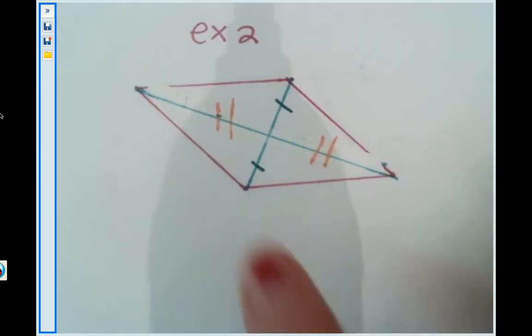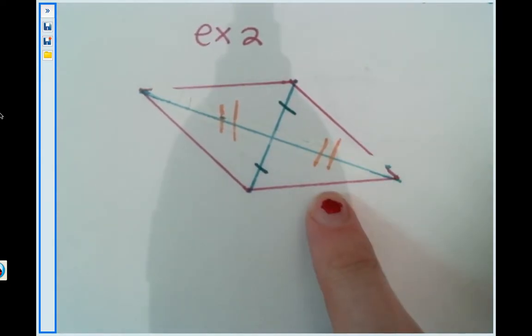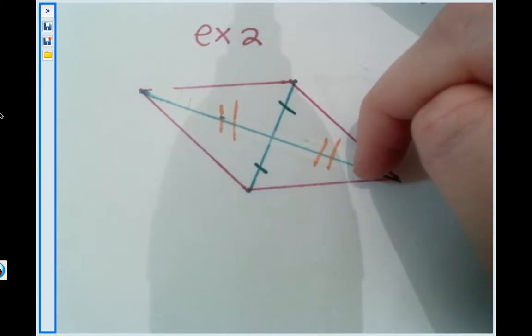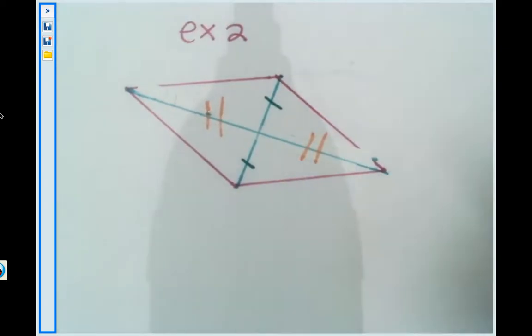So now we must find out if this is an actual parallelogram or if it's a wannabe parallelogram. I see things about the diagonals, and I see that these two pieces of the diagonals are congruent and these two